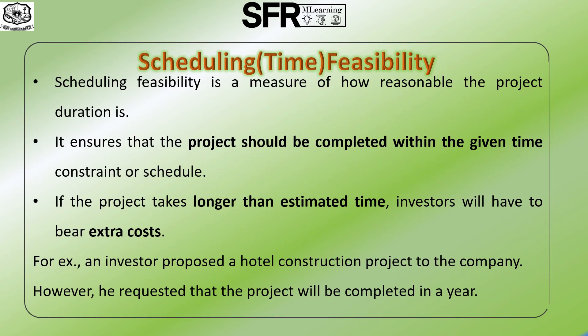The last type of feasibility study is Scheduling feasibility, otherwise called time feasibility, which helps to measure how reasonable the project duration is. It ensures the project should be completed within the given time constraint or schedule. Completing a project on time is very important from an investor's perspective — if the project takes longer than the estimated time, the investor will have to bear extra cost. It also verifies and validates whether the deadlines of the project are reasonable. For example, an investor proposed a hotel construction project to his company and requested it be completed in one year. The project team then conducted a feasibility study based on a list of requirements to complete the project on time.